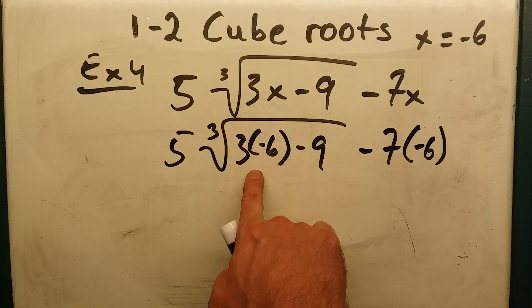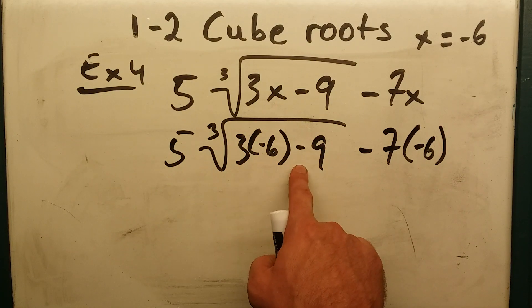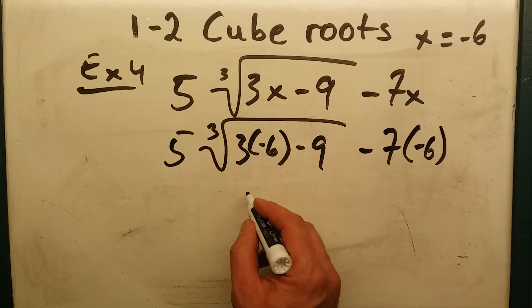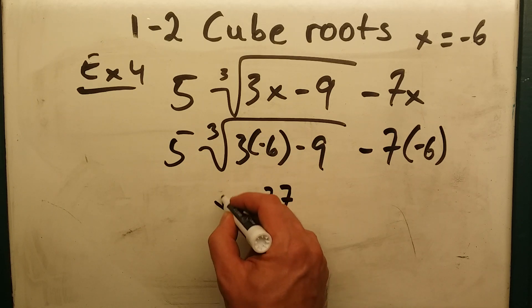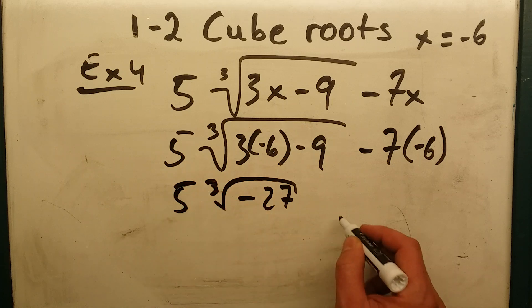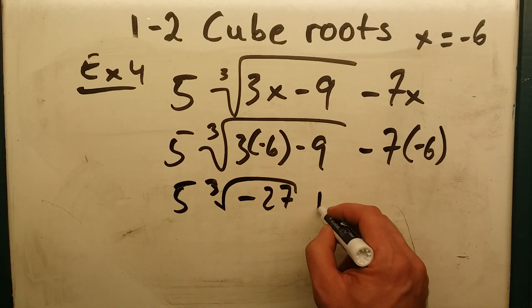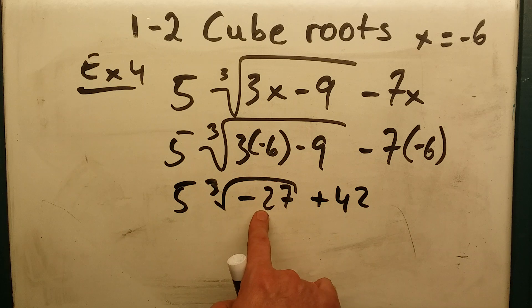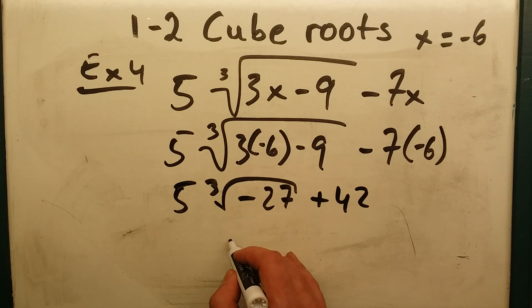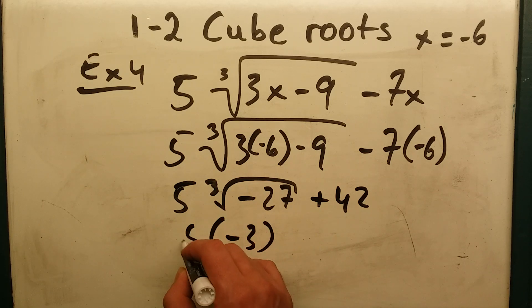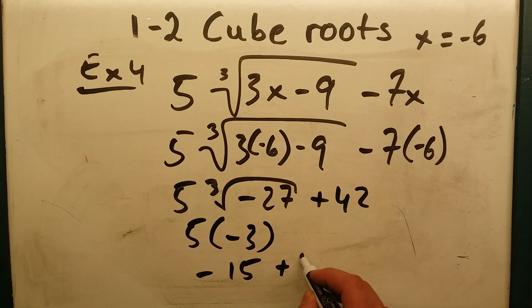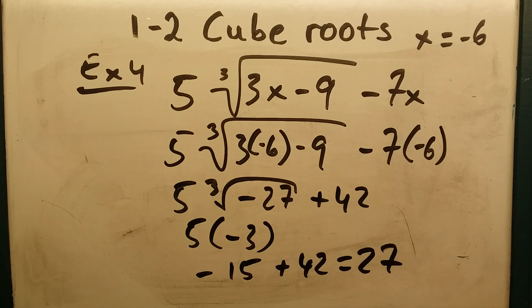Evaluate what's under here. 3 times negative 6 is negative 18. Negative 18 minus 9 is negative 27 times 5. Negative 7 times negative 6 is positive 42. Cube root of negative 27 is negative 3 times 5 is negative 15 plus 42 is 27. And there you have it. Cube roots.